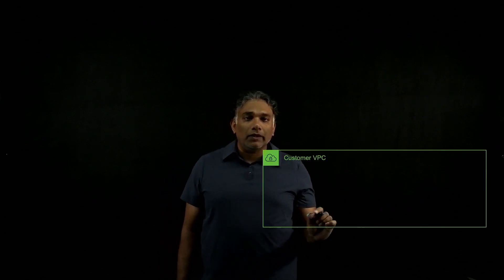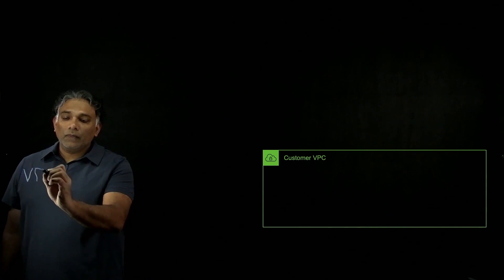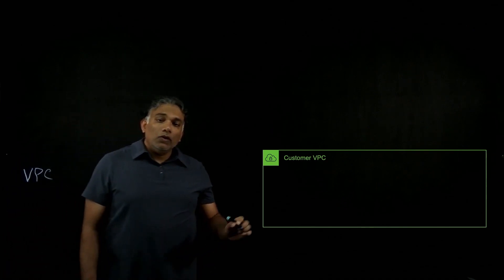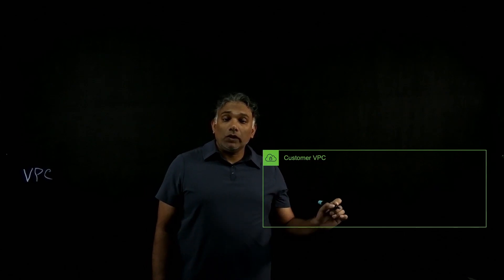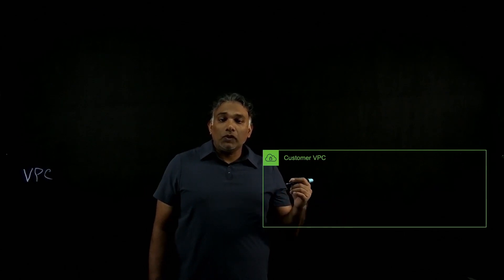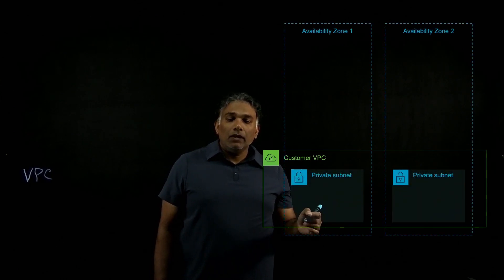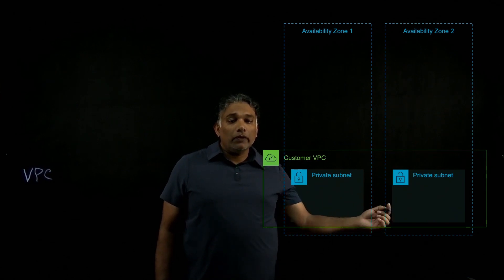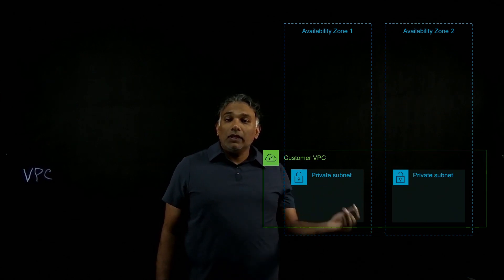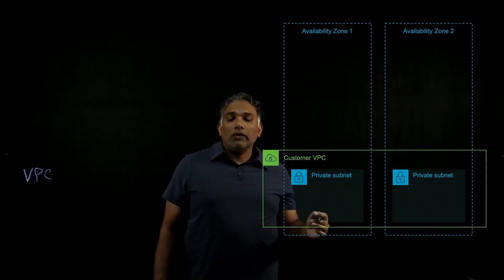The first thing we want to look at is your Customer Virtual Private Cloud environment. This is typically where you deploy your customer managed VMware or AWS workloads. You would set up your security rules, your connectivity, EC2 instances, and so forth. When we do this deployment we encourage customers to deploy across two availability zones. This ensures high availability and durability of your workloads that you might run within this environment.